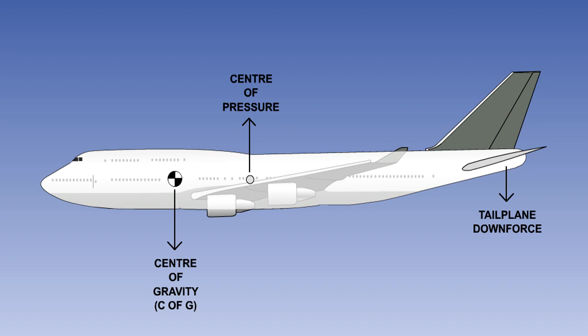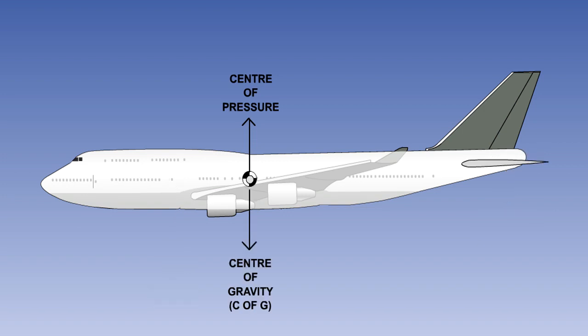We will now look at longitudinal trim by centre of gravity or C of G adjustment. While the variable incidence tailplane produces a drag reduction over a trimming tab, the minimum drag will be produced if the tailplane can be made aerodynamically neutral. This can be achieved by moving the aircraft centre of gravity as close as possible to the wing centre of pressure.